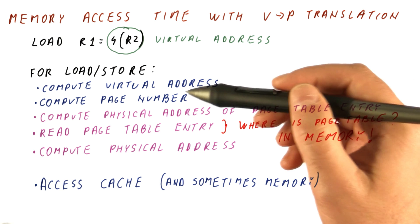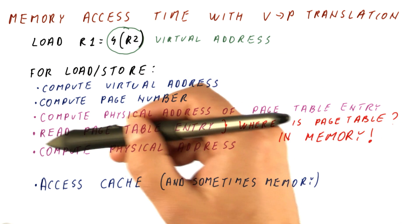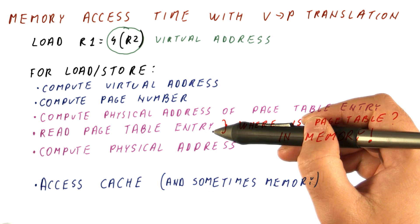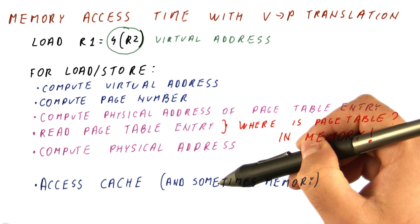And that means that for each load or store, we now need to have a memory access, which is just as slow as when we have a cache miss that we were trying to avoid before we got to page tables.